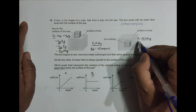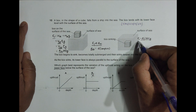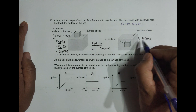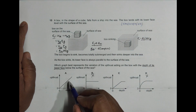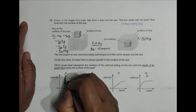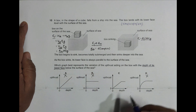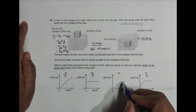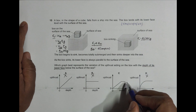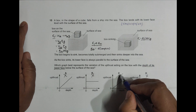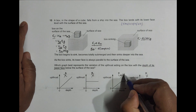After full immersion, the upthrust is at its maximum and remains constant. Looking at the graphs, no constant portion is observed in some options, so those are not correct. The correct choice is C, because it shows upthrust constant after reaching a maximum value.